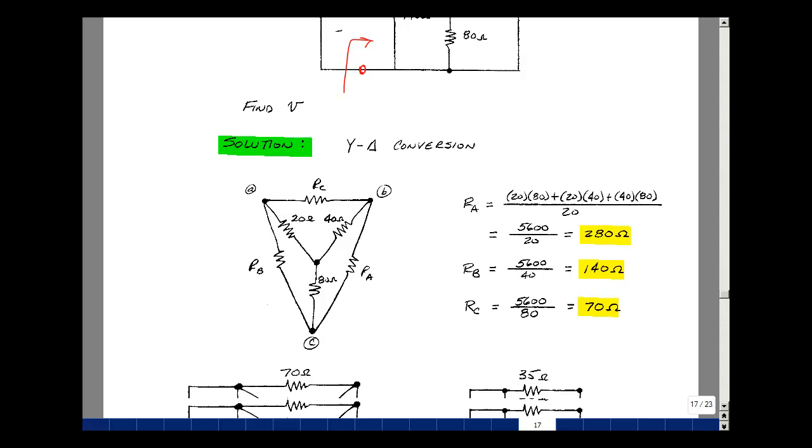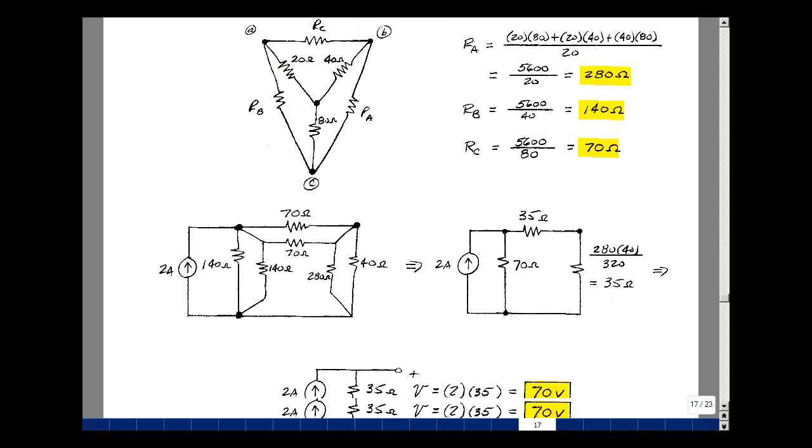Now let's redraw that delta in place of our Y. Here's my R sub C, here's my R sub B. I kind of stretched it from here over to here. Here's my R sub A. A little bit easier to see that these two are in parallel, these two are in parallel, and these two are in parallel.